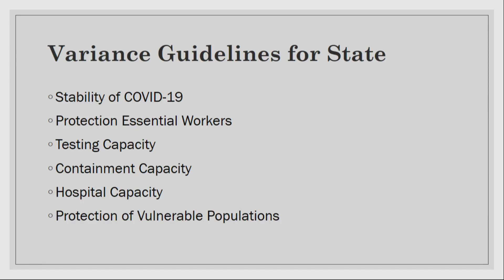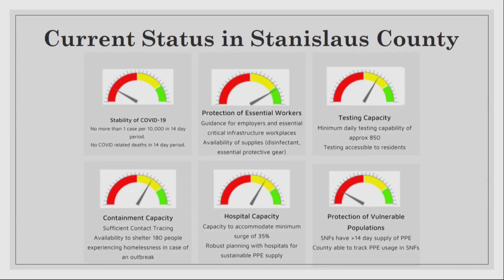I challenged our team to build a dashboard showing where we fit on each category today and where we could be in short order. Our first indicator is in the red — the stability of COVID-19 — because the governor's office created a pass-fail test: no more than one case per 10,000 in a 14-day period, and no COVID-related deaths in a 14-day period. This has no discretion at the local level for how you consider case transmission in your community. The other areas — protection of essential workers, testing capacity — are looking good.